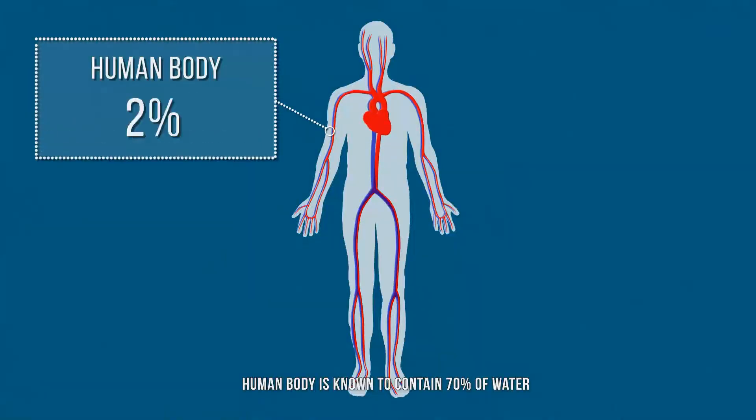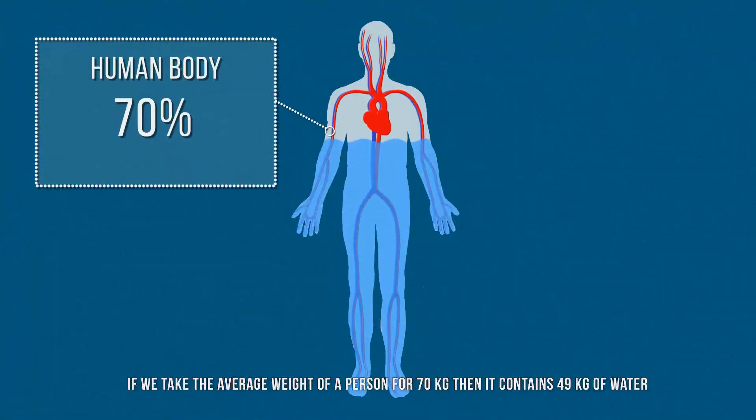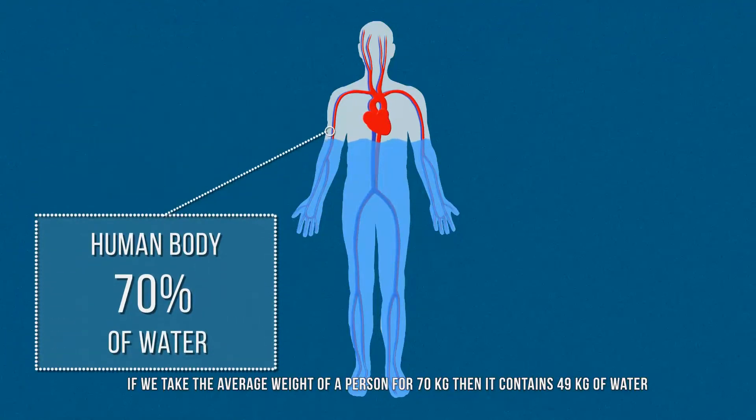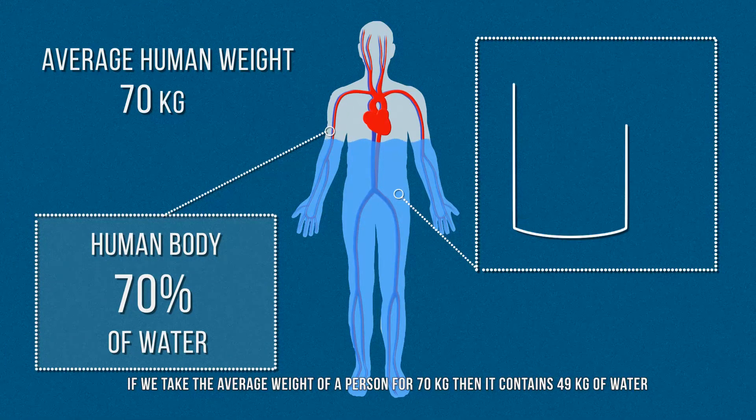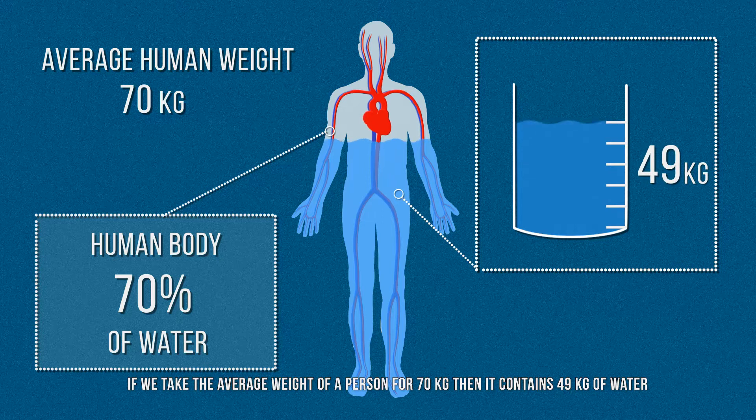Human body is known to contain 70% of water. If we take the average weight of a person for 70 kg, then it contains 49 kg of water.